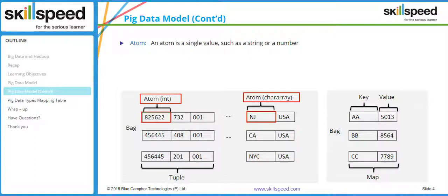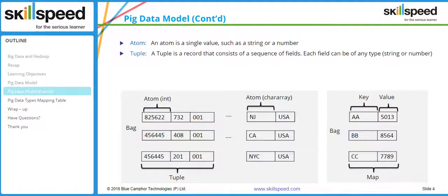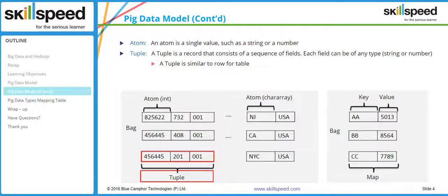A tuple is a record that consists of a sequence of fields, where each field can be of any type. A tuple is similar to a row of a table. If you look at the picture, the row is actually called a tuple — for example, the last row which starts with 456 445 is an example of a tuple.